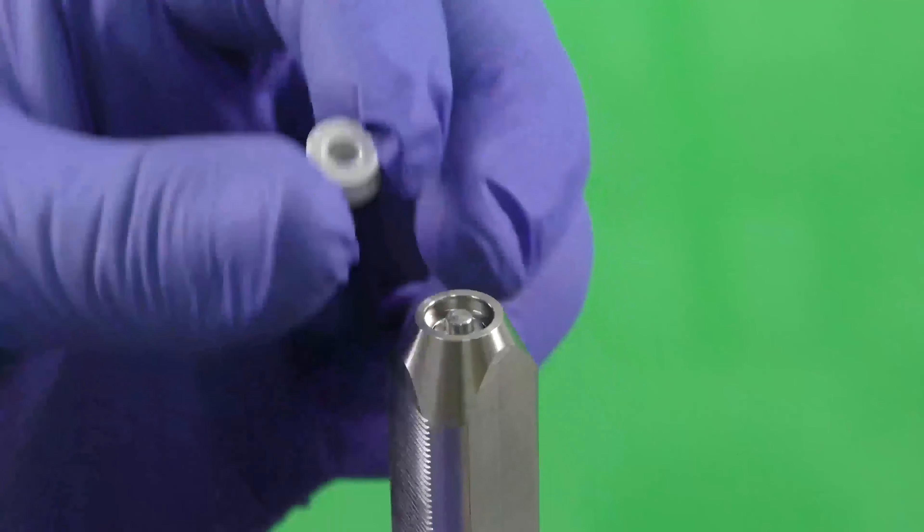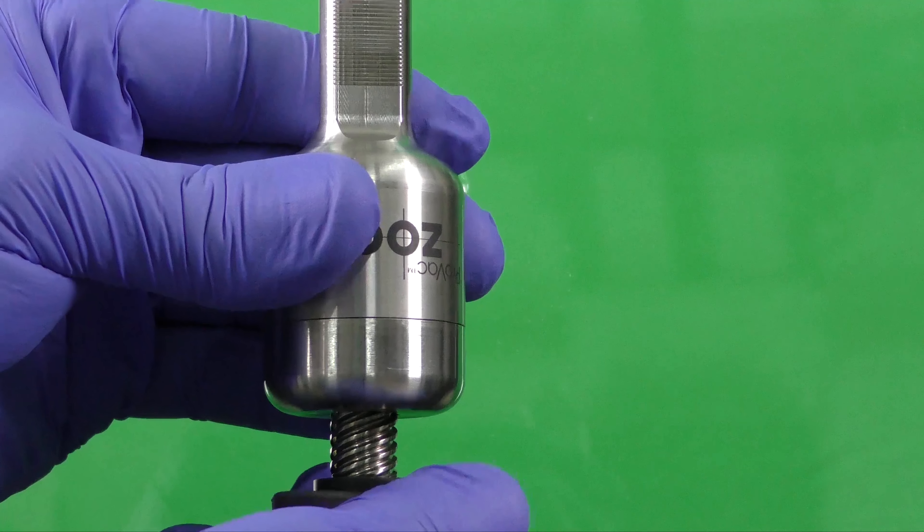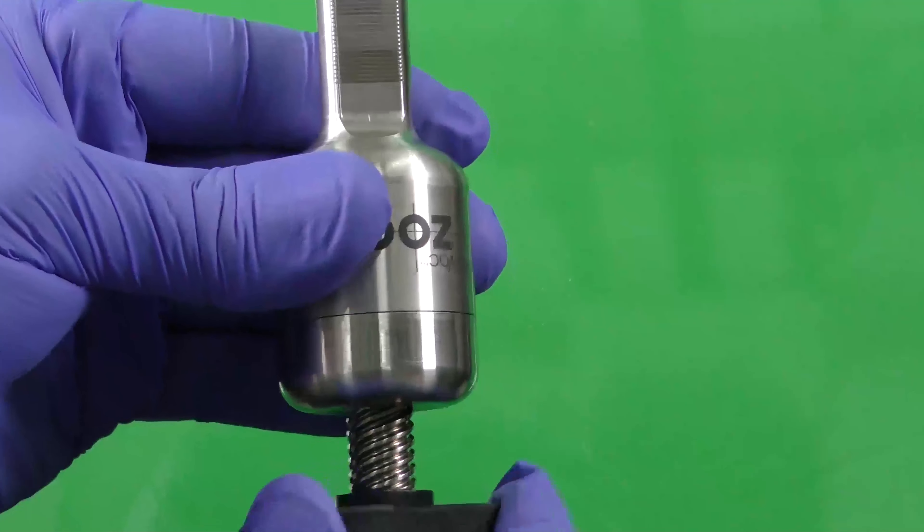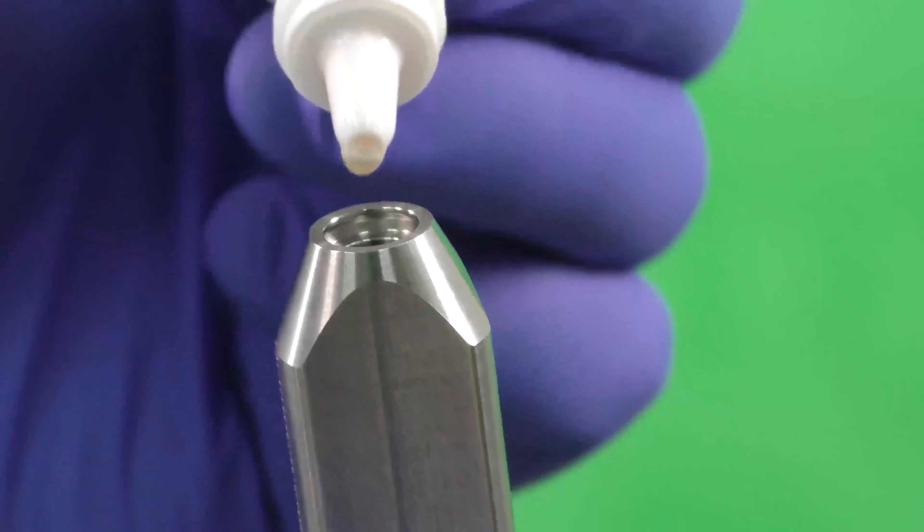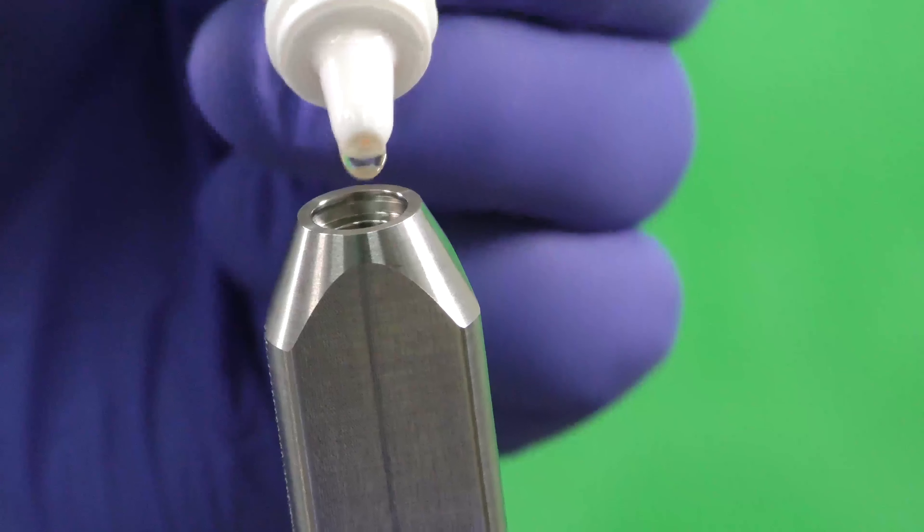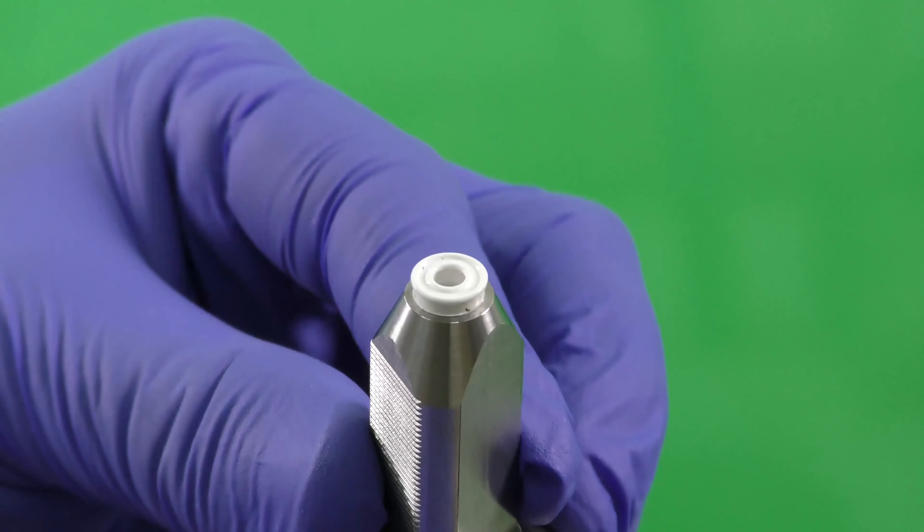Remove the end seal and turn back about two full turns to prepare to load the resin. Put about four to six drops of resin in the injector and install the end seal.